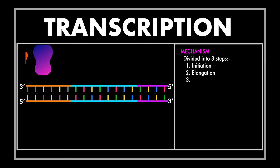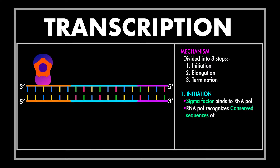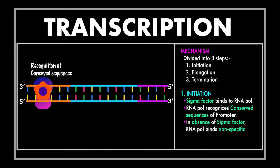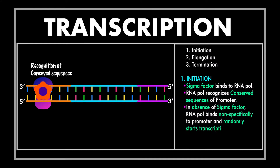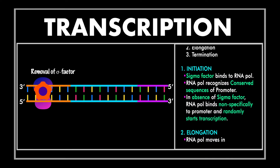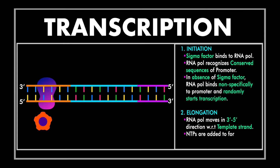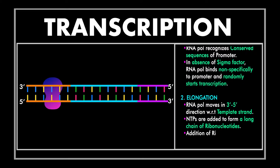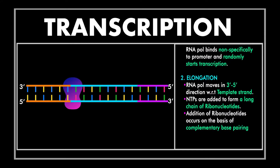Now let's see the mechanism of transcription, which is divided into three main steps. The first step is initiation. Binding of RNA polymerase to the promoter region is facilitated by sigma factor. In the absence of sigma factor, RNA polymerase binds non-specifically to the DNA and starts transcription randomly at any site.